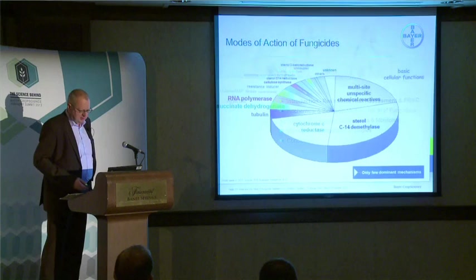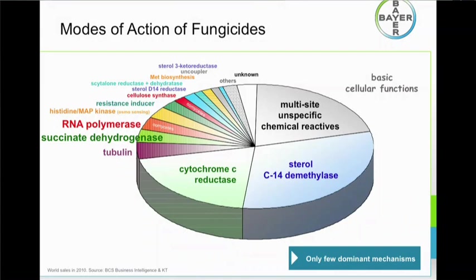I'd like to start with this cake diagram on different modes of action of fungicides. We now have more or less 40 different chemical classes covering four different modes of action in the market. The majority of fungicides belong to three main groups, covering roughly 70% of all available fungicides. The first group represents the so-called multisite or unspecific fungicides — a good example is chlorothalonil, known from Bravo, as well as anthracyl and other older chemistry.